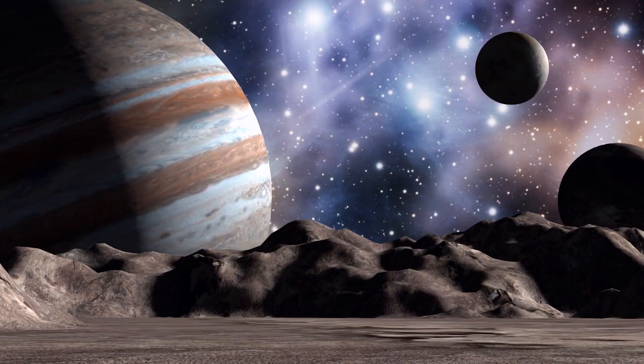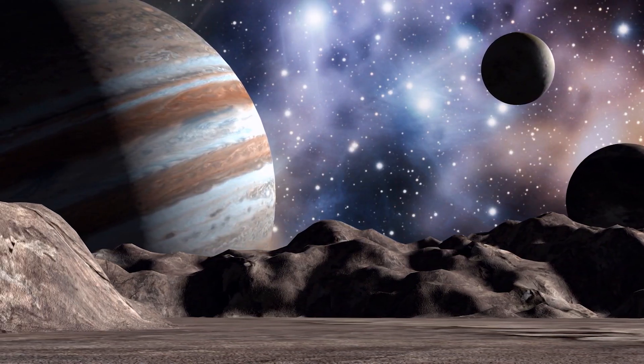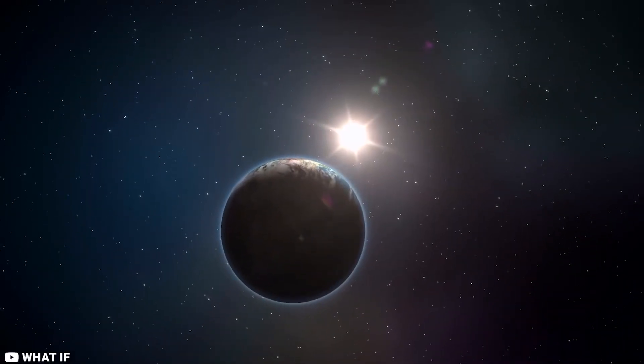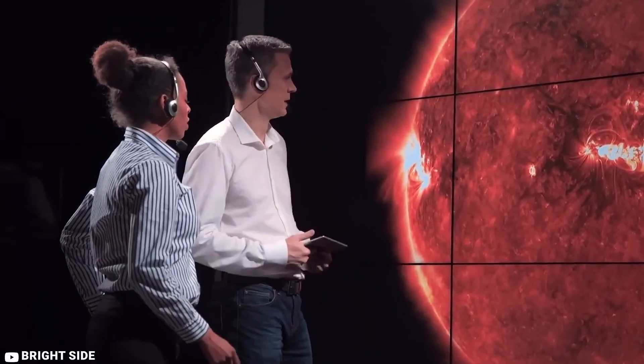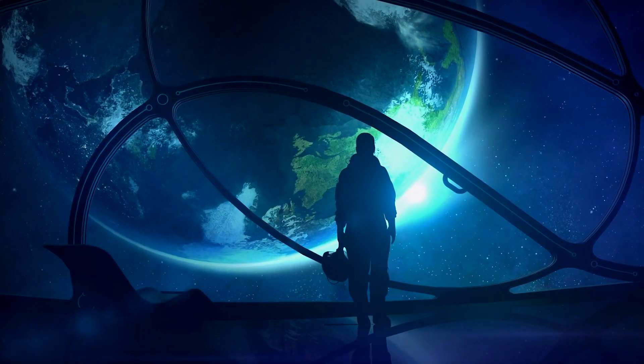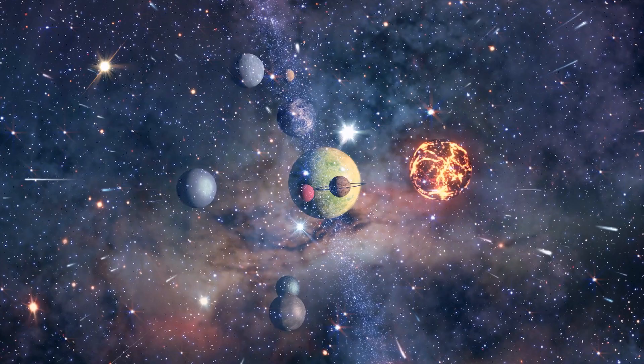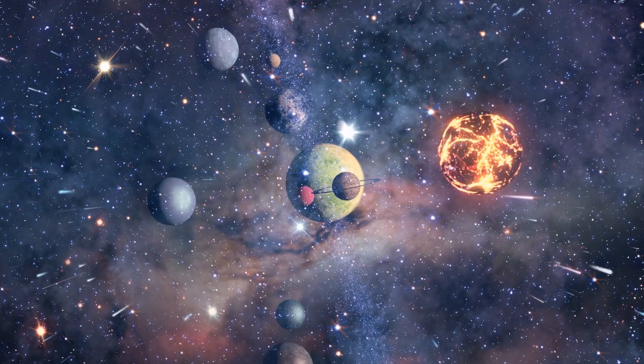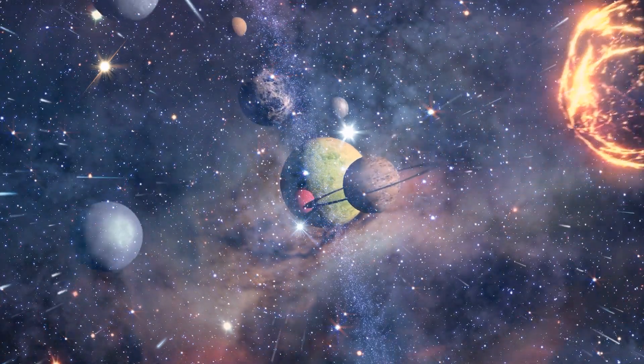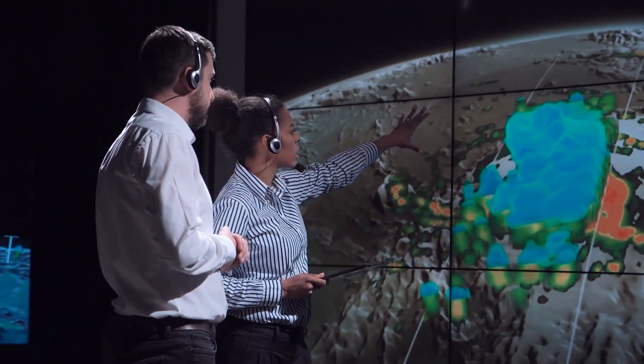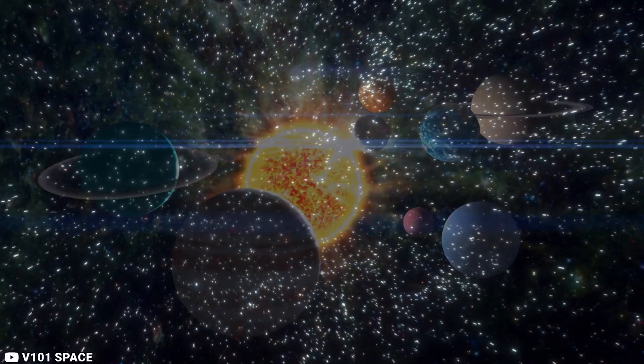Some exoplanets are located in the habitable zone of their star, which means that they could potentially support life. However, scientists have not yet found any definitive evidence of life beyond Earth. The presence of exoplanets suggests that planets are very common in the universe. In fact, scientists believe that there are more planets in the universe than stars.